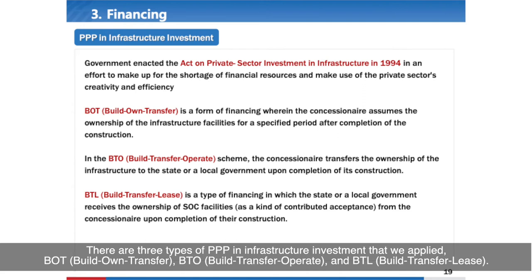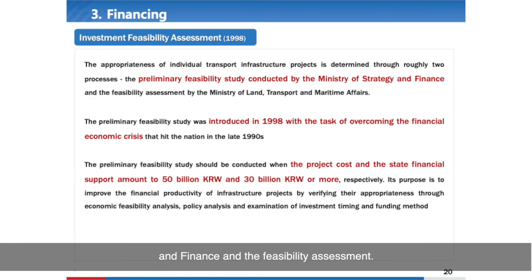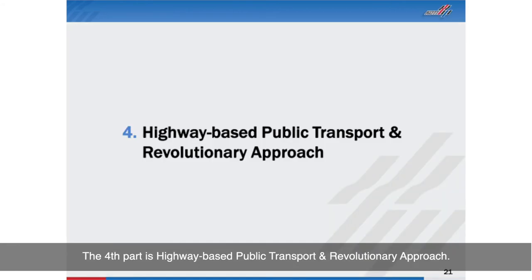There are three types of PPPs in infrastructure investment applied in Korea: BOT (Build Operate Transfer), BTO (Build Transfer Operate), and BTL (Build Transfer Lease). The suitability of individual transport infrastructure projects is determined through two processes: the preliminary feasibility study and the finance and feasibility assessment.